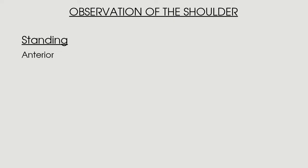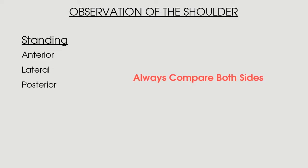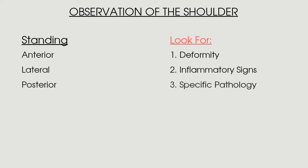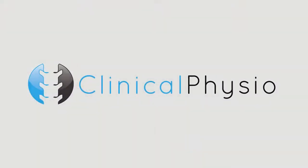To summarise: when observing the shoulder joint in standing, break your observation into anterior, lateral and posterior views. Always compare both affected and unaffected sides. Look for deformity and inflammatory signs — redness, swelling and bruising — and look for signs of specific pathology in each view as discussed throughout the video. From here, check out our other Clinical Physio videos on active and passive range of motion testing at the shoulder joint. Thanks so much for watching — we'll see you again soon on Clinical Physio.